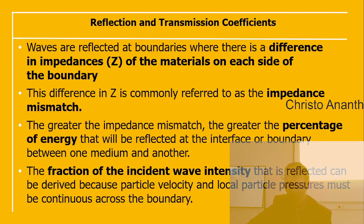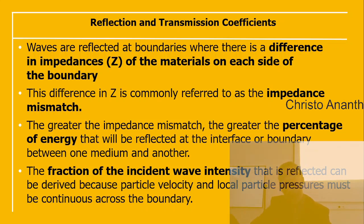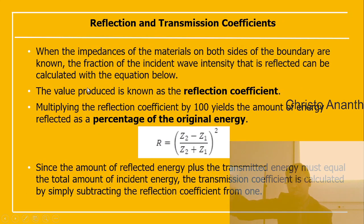Waves are reflected at boundaries where there is a difference in impedance between the materials on each side — called impedance mismatch. The greater the impedance mismatch, the greater the percentage of energy reflected at the boundary. The fraction of incident wave intensity that is reflected can be derived from the requirement that particle velocity and local particle pressures must be continuous across the boundary.